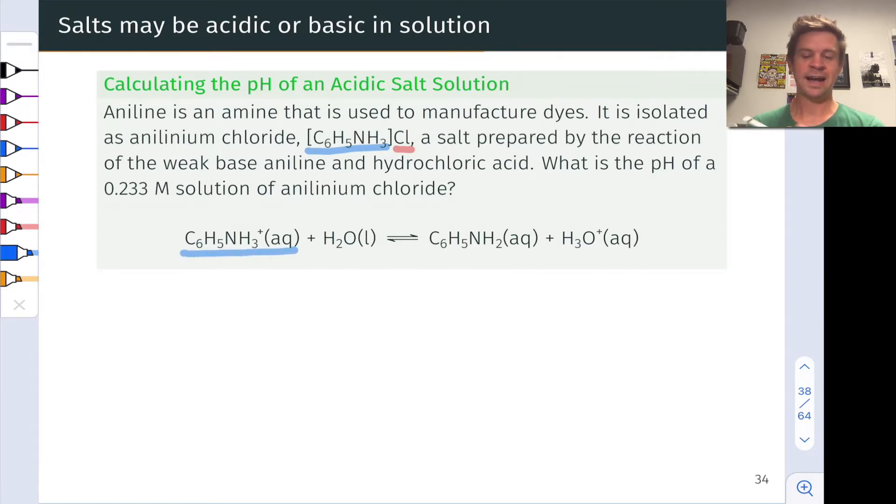This is a weakly acidic cation, and it's together with the negligibly basic chloride anion. So we can ignore chloride entirely, it's just a spectator, and think about the reaction of this cation with water to rationalize and calculate the pH of this solution.